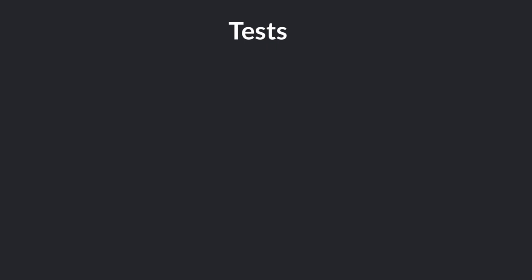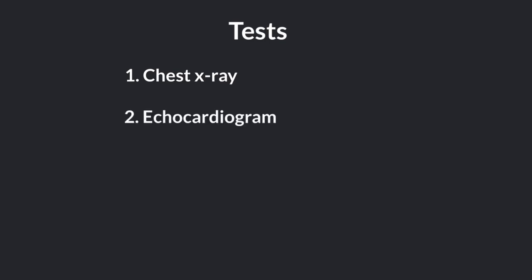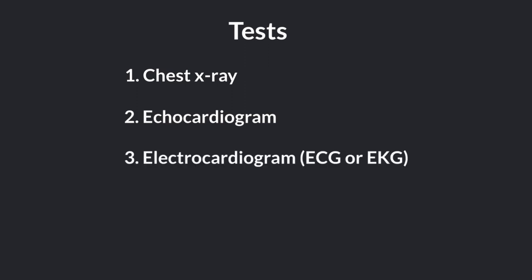If a healthcare provider hears a murmur upon examination, they will refer you to a cardiologist who may order additional tests to rule out a heart issue. These tests can include a chest x-ray, which takes a picture of your heart to look for structural problems; an echocardiogram, which is basically an ultrasound of your heart to look at the valves, chambers, and pumping action; and an electrocardiogram, better known as an ECG or EKG, which measures the electrical activity of your heart.